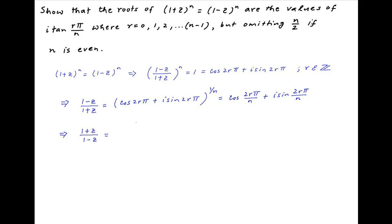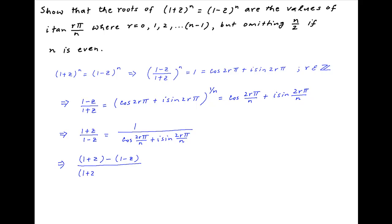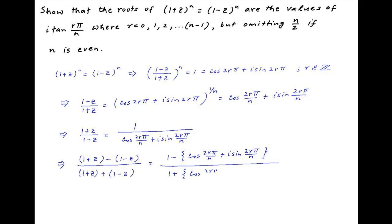Taking the reciprocal of both sides we get (1+c)/(1-c) = 1 / (cos(2rπ/n) + i·sin(2rπ/n)). Applying Componendo Dividendo, the left hand side becomes (1+c - (1-c)) / (1+c + (1-c)), and the right hand side is (1 - (cos(2rπ/n) + i·sin(2rπ/n))) / (1 + cos(2rπ/n) + i·sin(2rπ/n)).